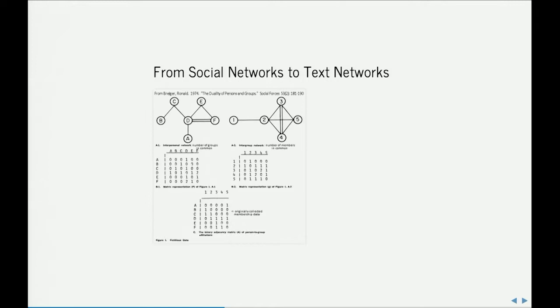We're going to first work through the more useful application: connecting people based upon their shared use of words. To do that, we have to capture some intuition from a classic paper by Ronald Breiger, the sociologist, in 1974, about the duality of persons and groups. We typically think about a social network as connecting individuals to each other, but we can also do what's known as a two-mode projection — connecting people based upon their shared participation in another social group.